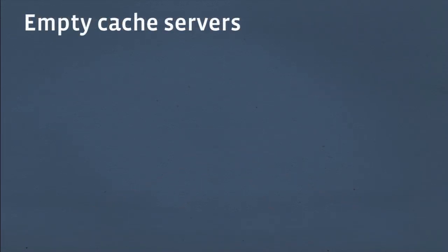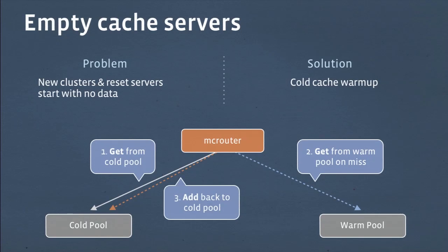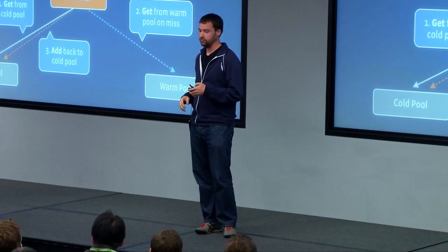Another problem we run into is maintenance — we end up with a bunch of empty cache servers after boxes are reset. The solution is cold cache warmup. We do the get to the regular cold pool. If we get a miss, we send that same get to a warm pool, which could be in another cluster. If we get the data back, we add it back to the cold pool. Note I used 'add' not 'set' — add is a conditional set that only sets the data if it's not already there. We use delete holdoffs inside Memcached to avoid races between data being deleted and then reset from the warm pool.